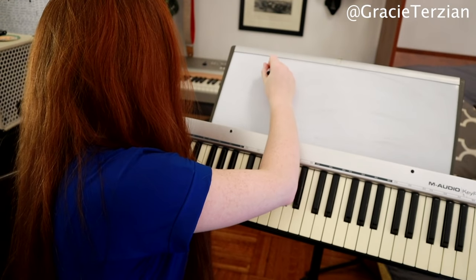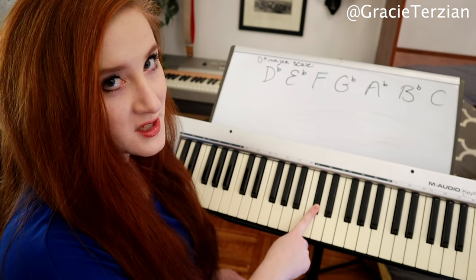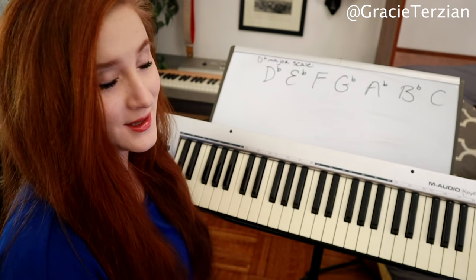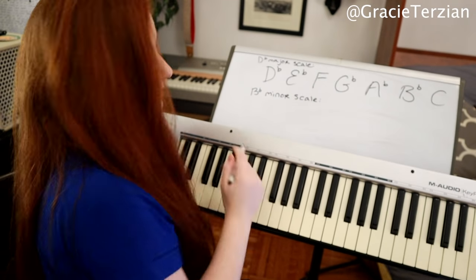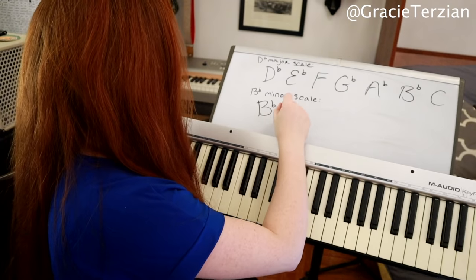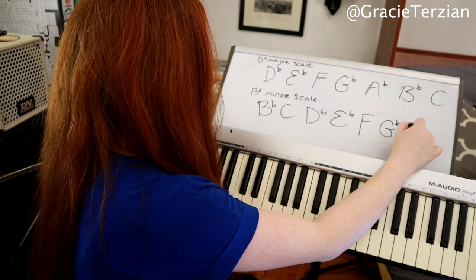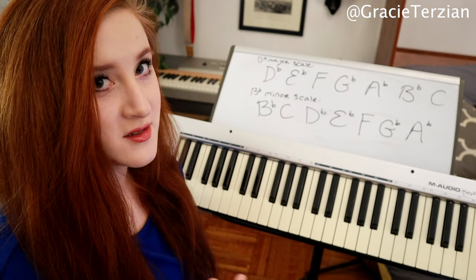What is the relative minor of D flat major? Let's write out our D flat major scale. I'm going to find D flat and move down three half steps in the chromatic scale — one, two, three — and I get to B flat. So B flat is going to be the relative minor of D flat major. Let's write out our B flat minor scale, starting on B flat, then C, D flat, E flat, F, G flat, and A flat. D flat major and B flat minor are relative keys — same notes, just starting on different places.